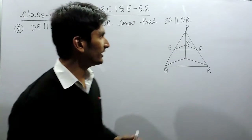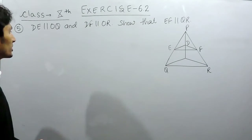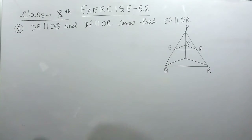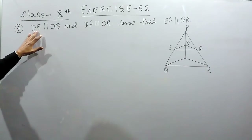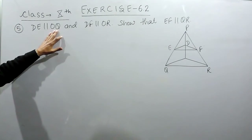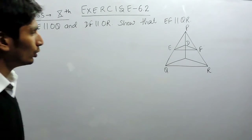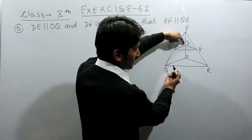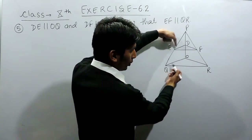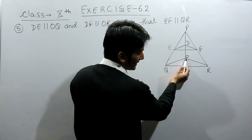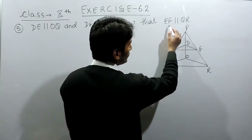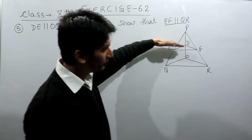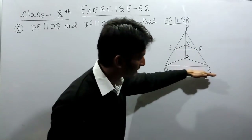Hello everyone. In this video we are going to solve question number 5 of exercise 6.2. The question says: you are given a triangle PQR where DE is parallel to OQ and DF is parallel to OR. You have to prove that EF is parallel to QR.